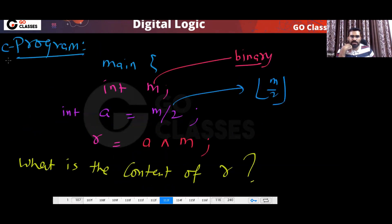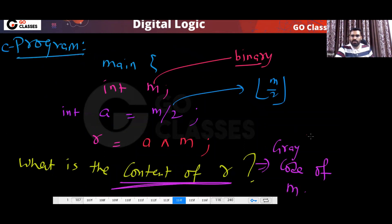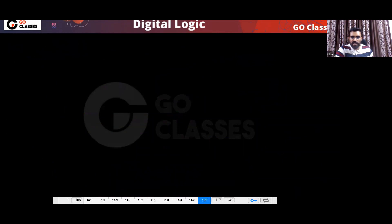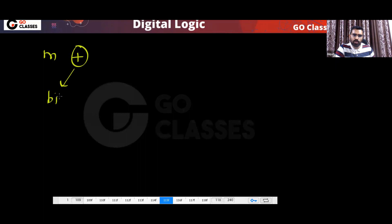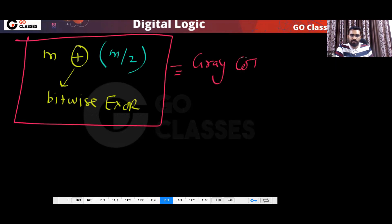This is the beauty of this method — they can create some kind of C program in the GATE exam. Whenever you see M bitwise XOR with M divided by 2, what should come to your mind is: this will give you the Gray code of M.